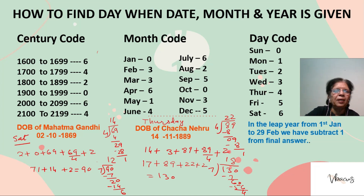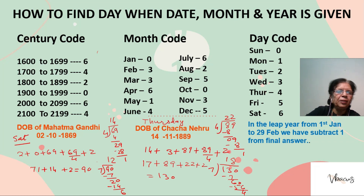On which day was Mahatma Gandhi born? Mahatma Gandhi was born on 2nd October 1869. First, we add the date 2 with the month code. October's code is 0, so we add 0.